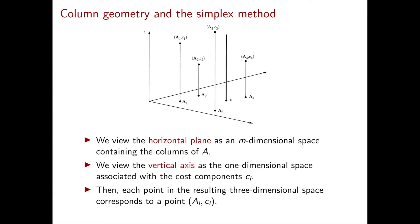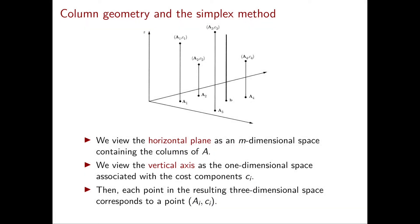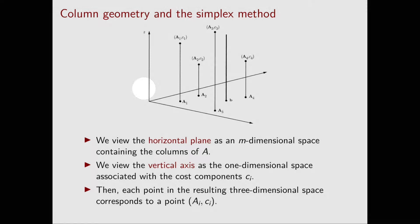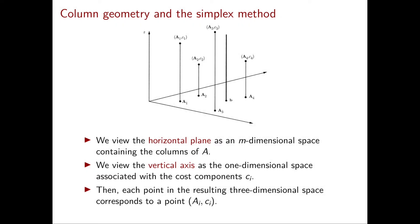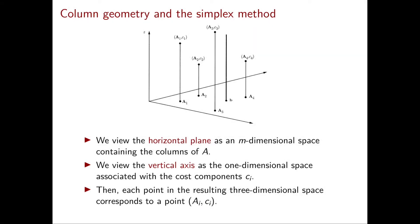Let's see how we can visualize these vectors. In my space, the horizontal plane will be an m-dimensional space containing the columns of A. My picture is three-dimensional, and the horizontal plane contains the points a1, a2, a3, and a4, so in this example m equals 2. I also have a vertical axis corresponding to the cost component ci. So while in the horizontal plane I draw ai, in the full space I draw the vector ai, ci for i going from 1 to n.